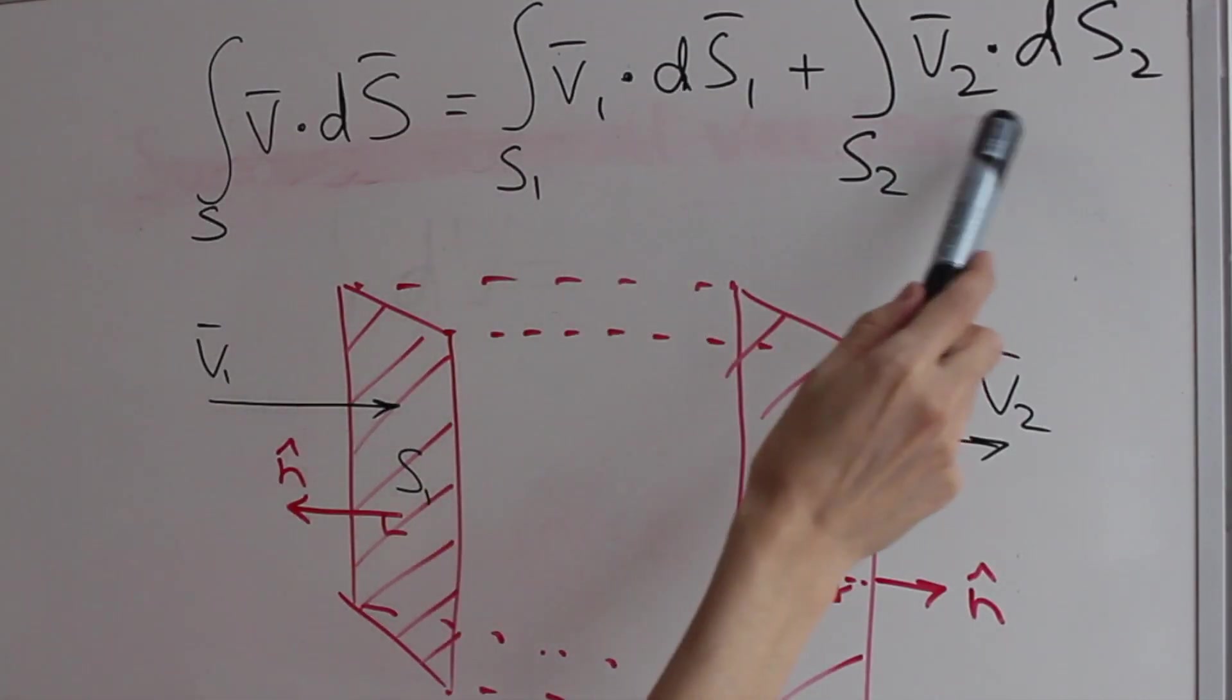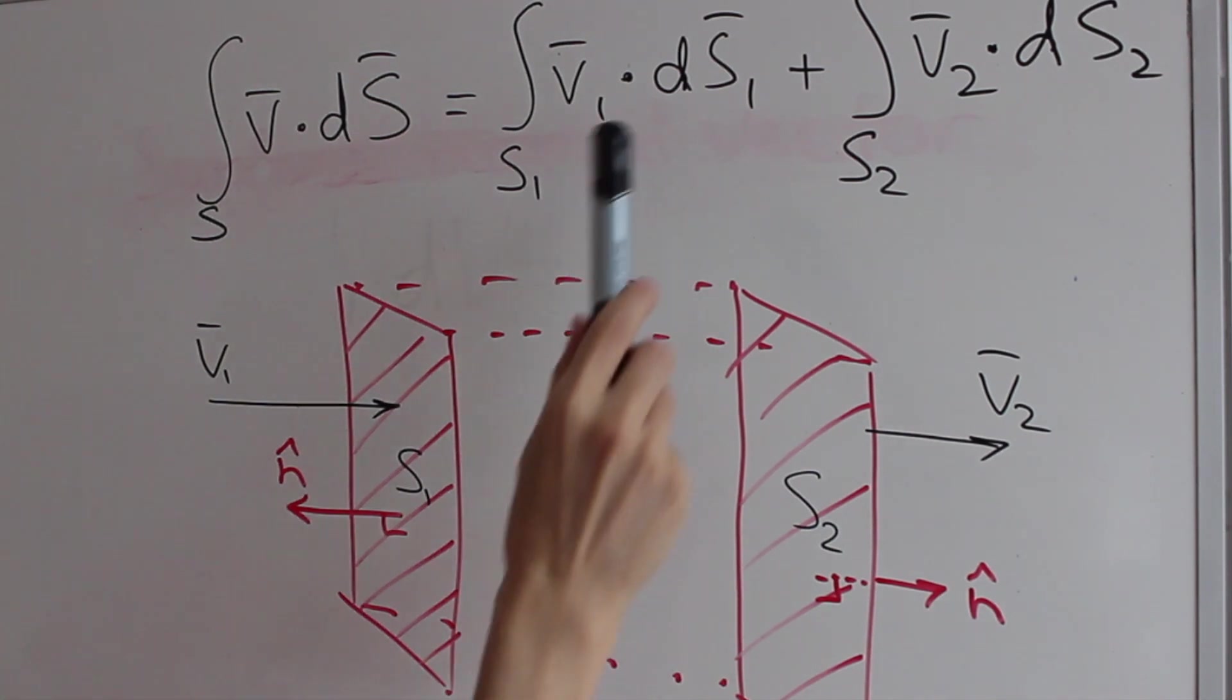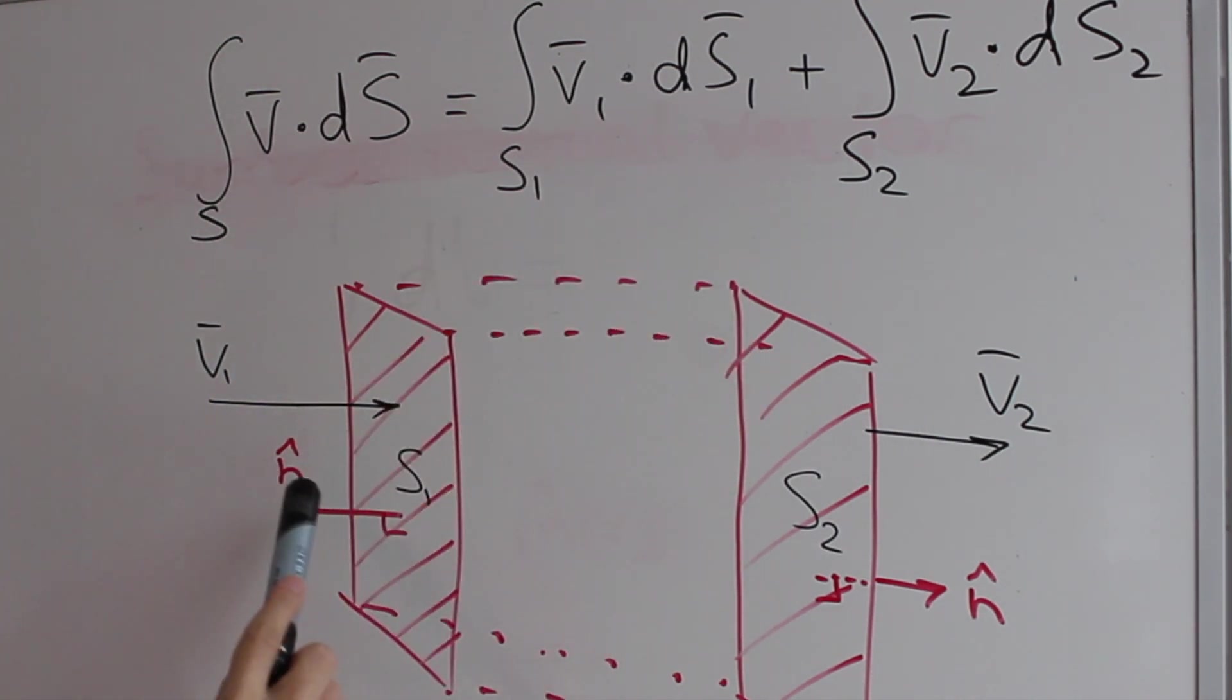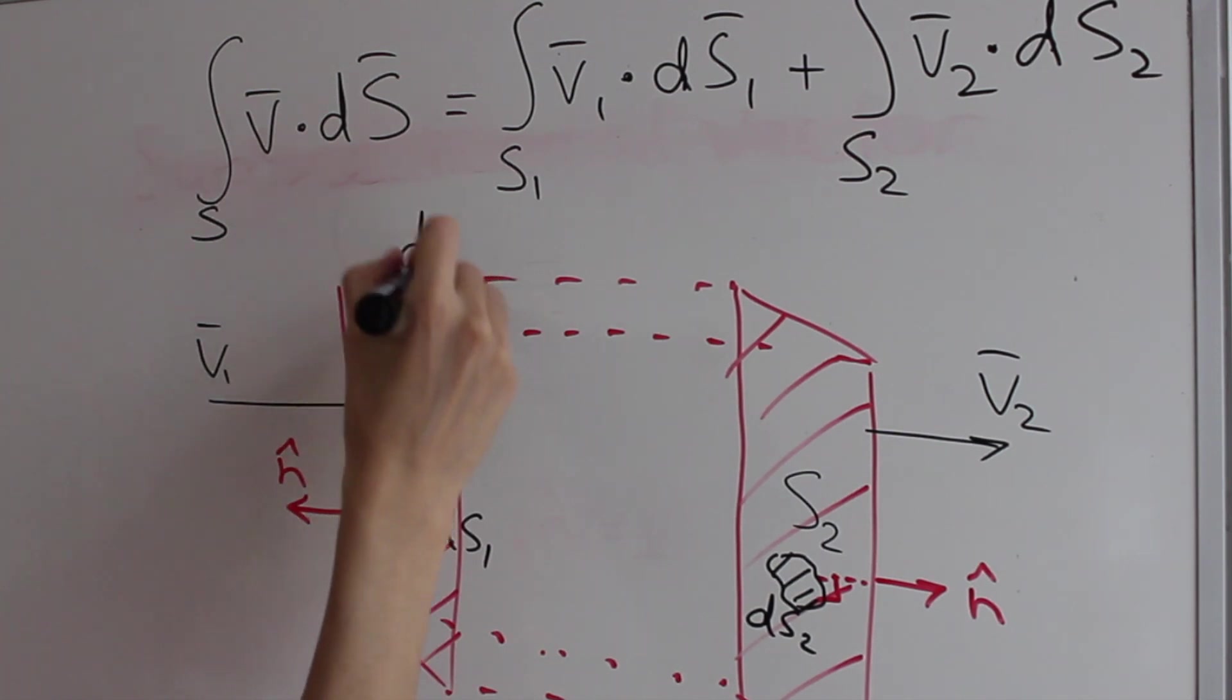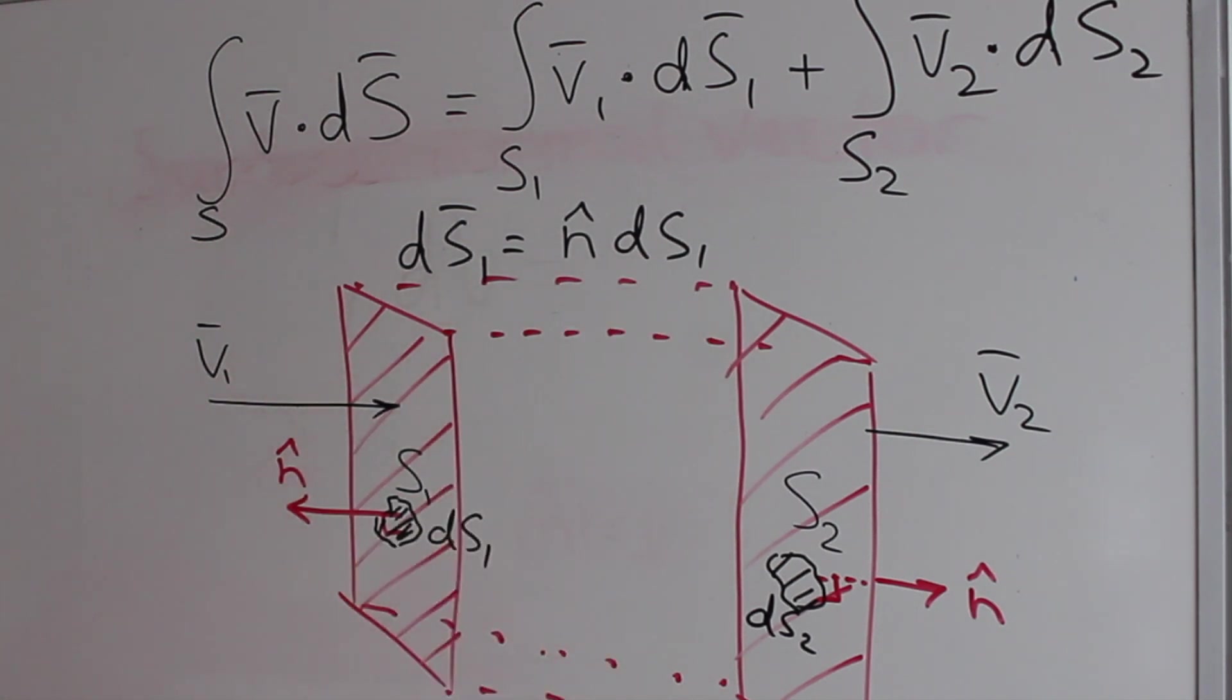So for vectors v1 and v2 it's easy to see the direction and magnitude. But what about the surface vector ds1 and ds2? Well we need to express the vector ds1 in terms of the normal vector n hat and little surface ds1. Let's say it's here. And same here with ds2.